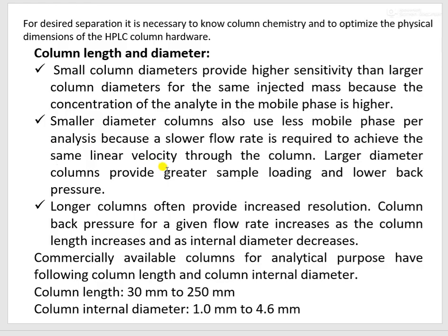For desired separation, it is necessary to know column chemistry and to optimize the physical dimensions of the column hardware. We will learn about column chemistry and physical dimension of HPLC column hardware one by one. First is column length and internal diameter. Small column internal diameter provides higher sensitivity than large column diameter for the same injected sample mass, because the concentration of analyte in the mobile phase is higher.